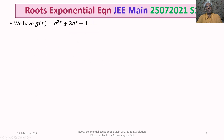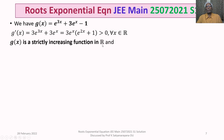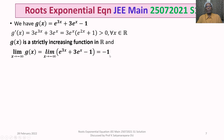Now for g(x) = e^(3x) + 3e^x - 1, the derivative is g'(x) = 3e^(3x) + 3e^x = 3e^x(e^(2x) + 1), which is always positive for all real x. So g(x) is a strictly increasing function on ℝ. Furthermore, the limit as x → -∞ of g(x) equals -1, so g(x) starts below zero.